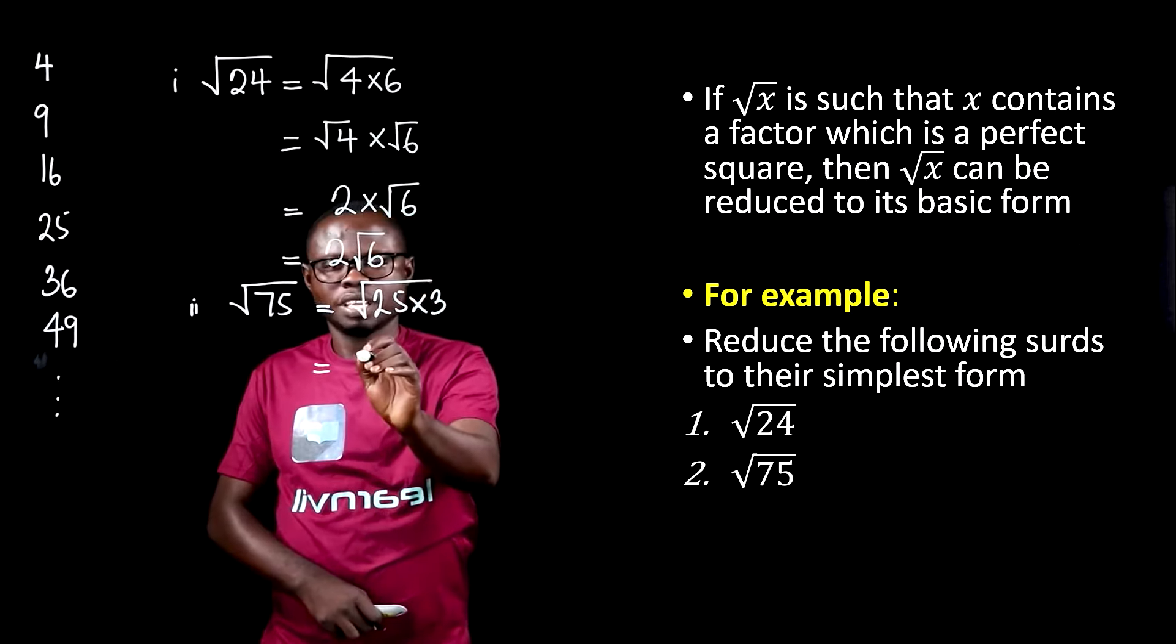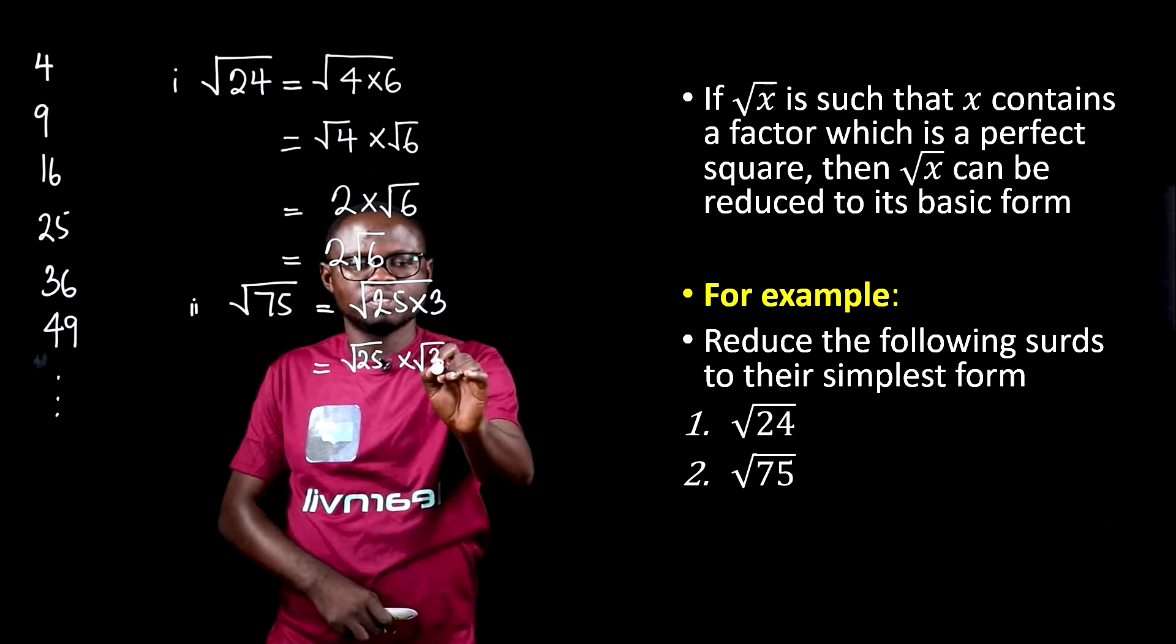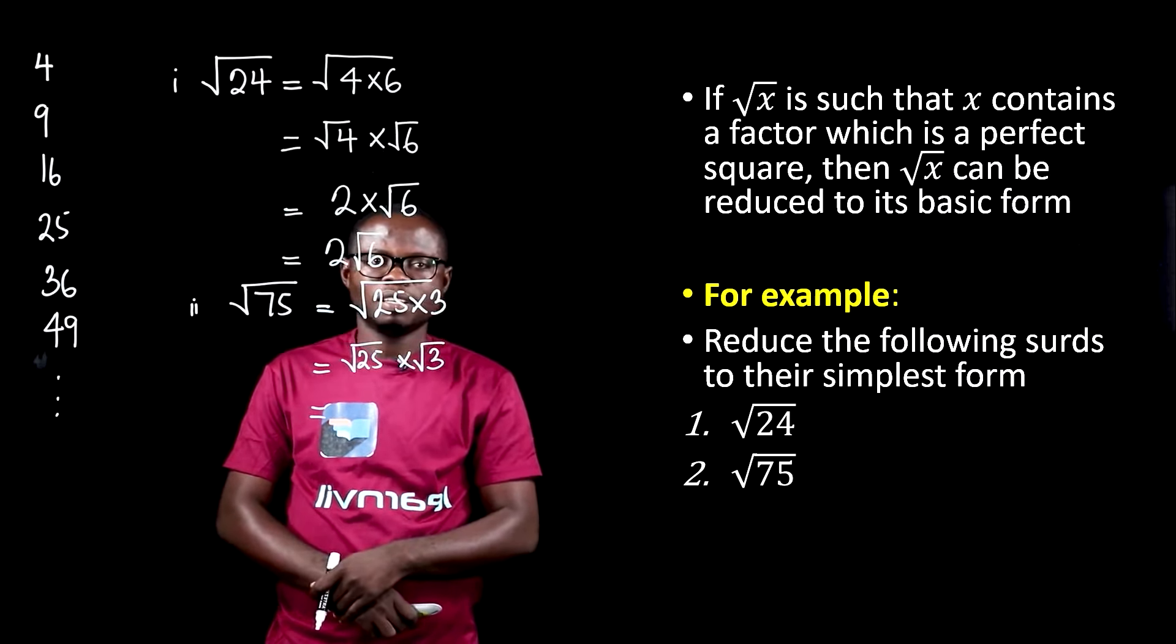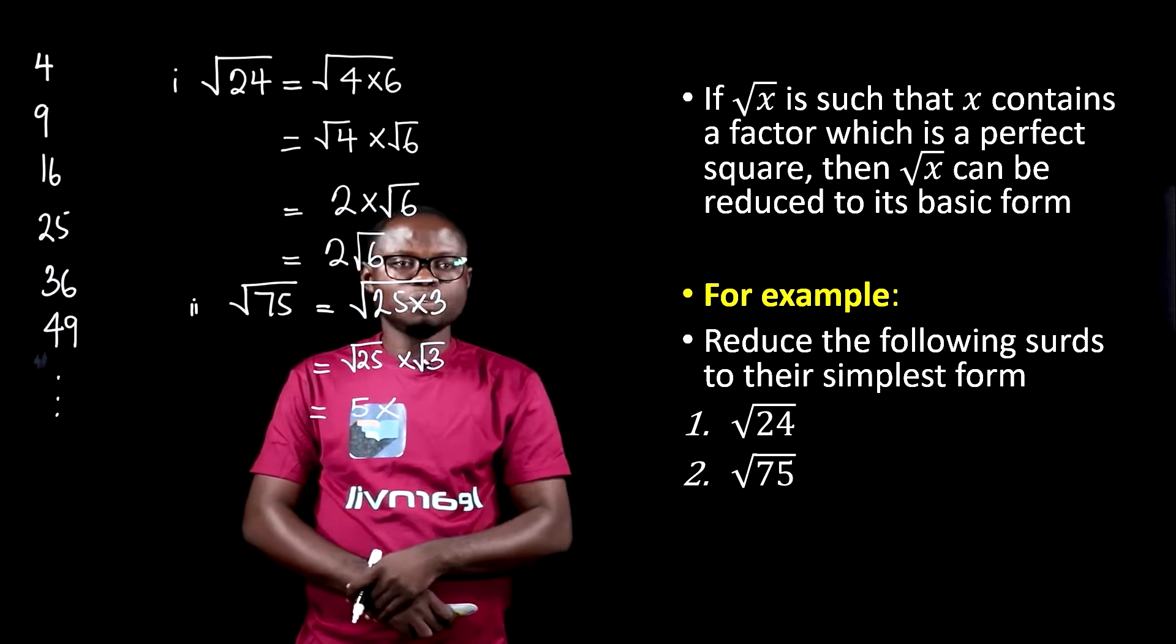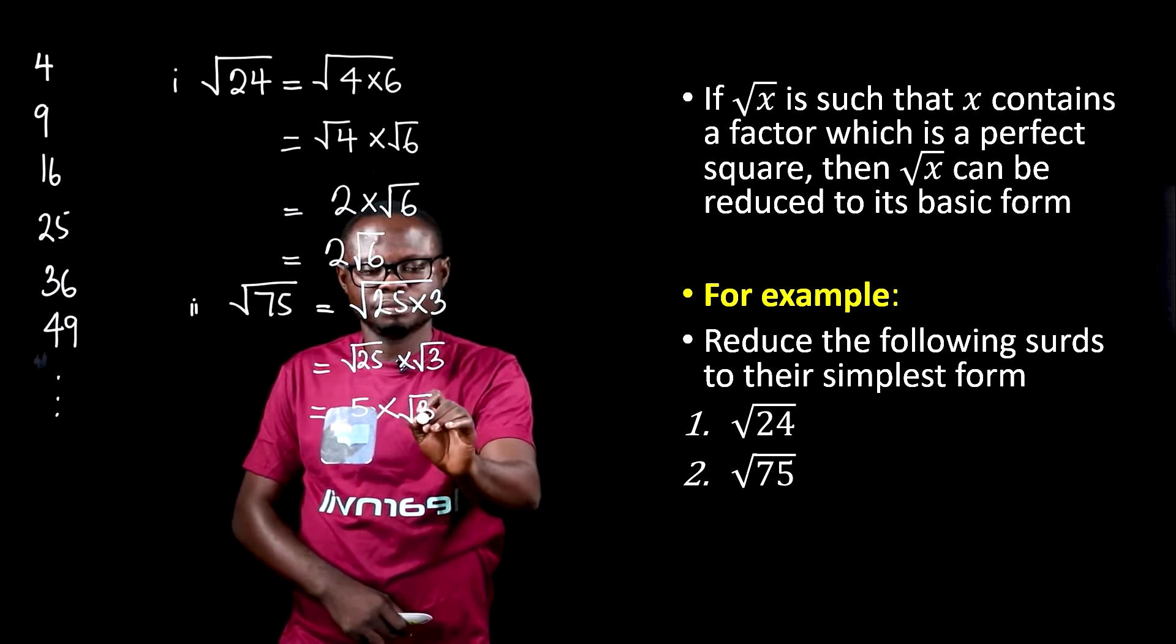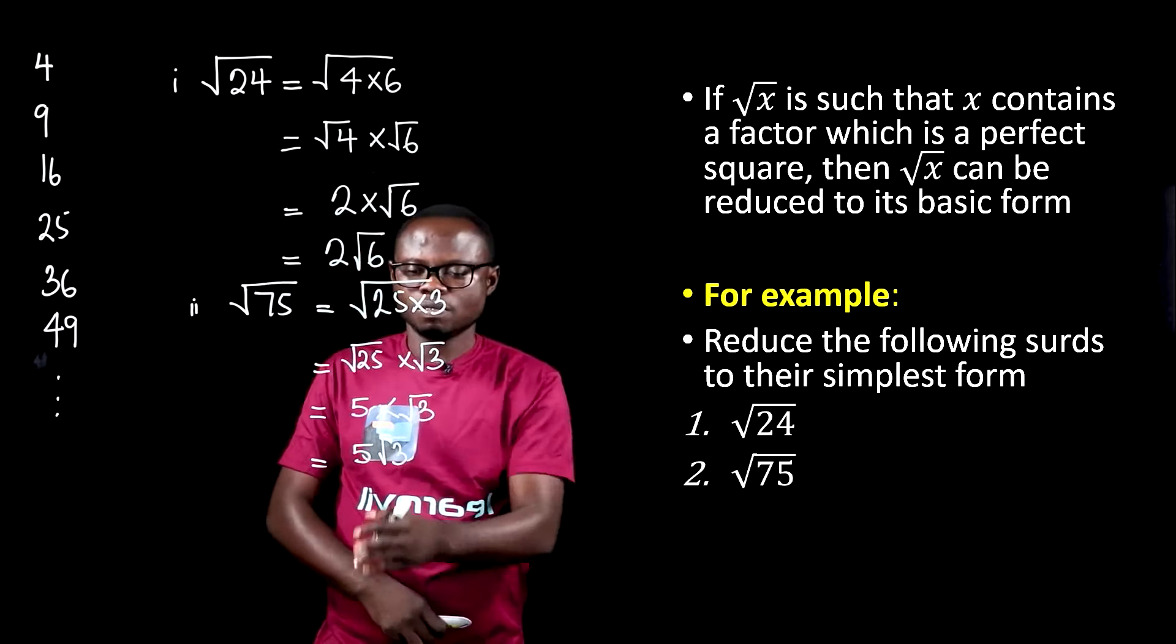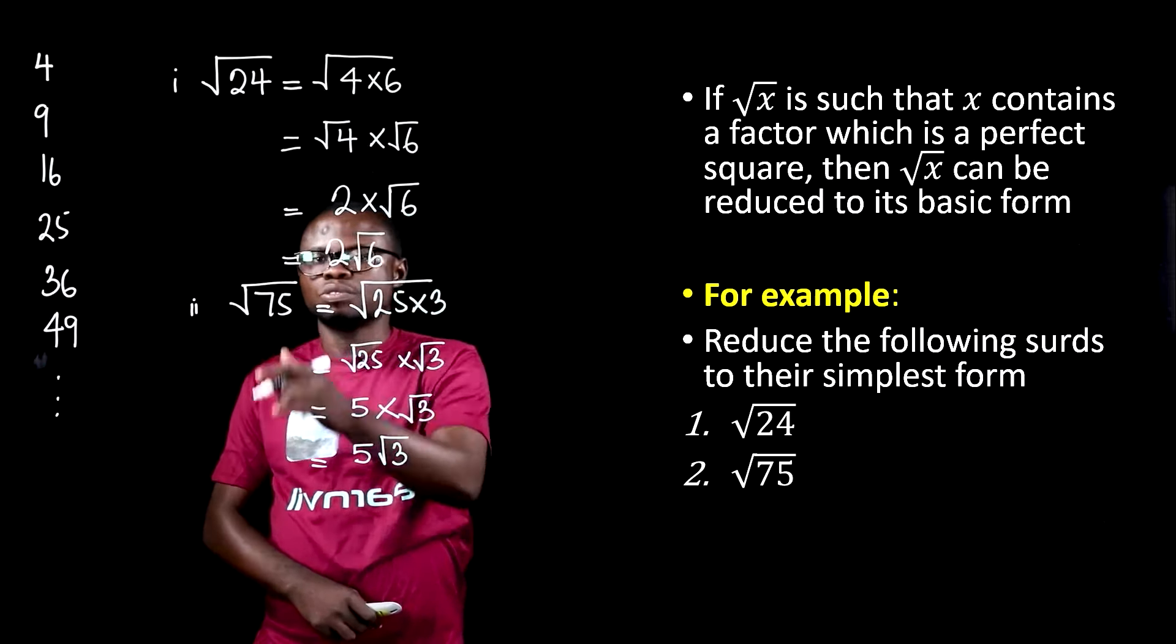With this, we can break this into the square root of 25 times the square root of 3. We can easily evaluate the square root of 25, and that gives us 5. However, the square root of 3 is an irrational decimal, so we keep it this way. Then the final answer becomes 5 square root of 3, and that is the basic form or simplest form of square root 75.